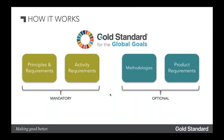So we get to the crux of it — what's new in the standard. The standard is now modular, with four key modules. The two mandatory ones are Principles and Requirements and Activity Requirements. These are mandatory for all projects and, for the first time, if you apply those two you can stop there and just certify as a Gold Standard project — there's no longer an assumption that you will follow a methodology and issue carbon credits. That's quite a major innovation, and there's more interest than perhaps expected, for example for NGO M&E work.